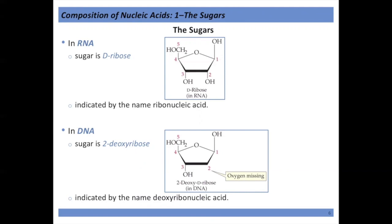In DNA the sugar is 2-deoxyribose — the difference is at the two-prime position there is no longer an OH. This is indicated in the name deoxyribose of deoxyribonucleic acid. In RNA the R stands for ribose; in DNA the D stands for deoxyribose. DNA lacks that two-prime hydroxyl group, and this actually gives DNA extra stability compared to RNA.